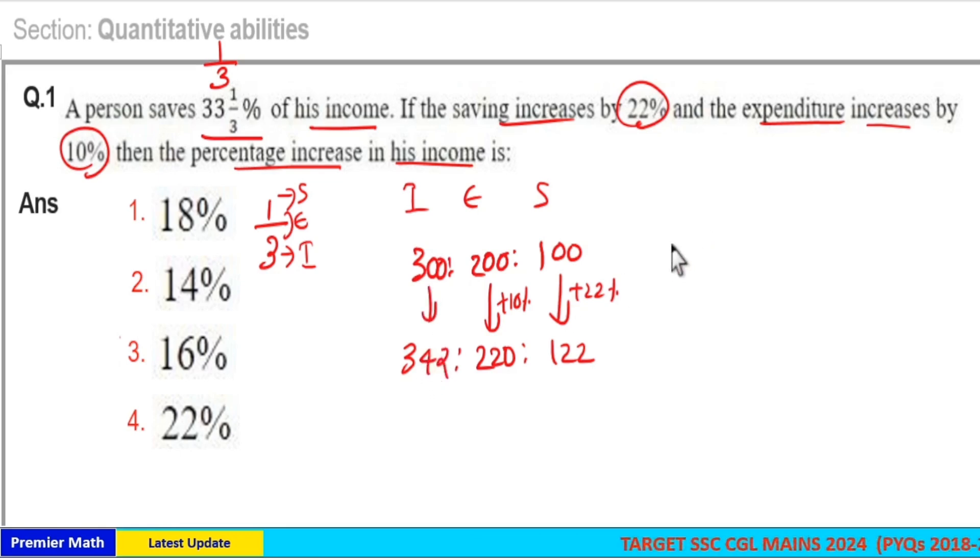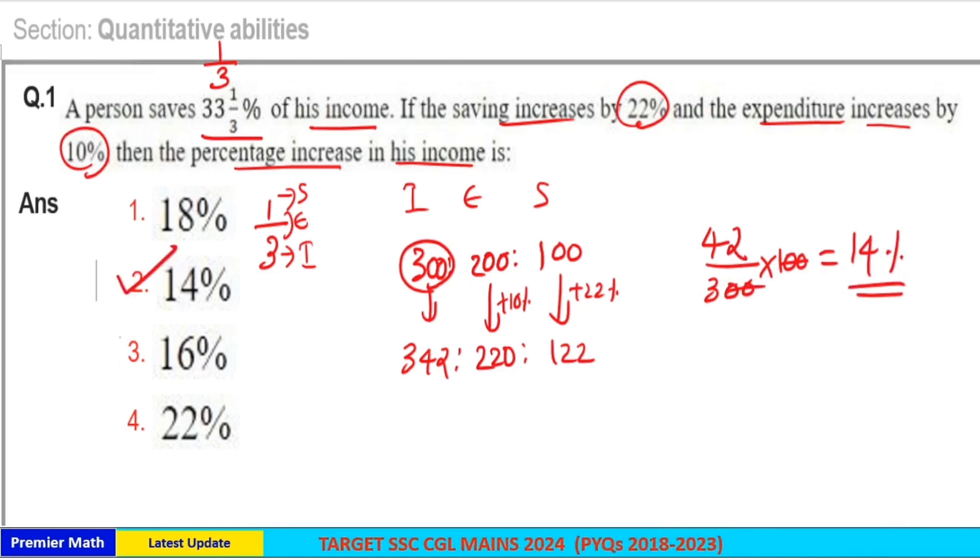The increment is 42 out of initial 300, times 100 for the percentage increment. 42 divided by 3 equals 14. So 14 percent is the increment in income. Option 2 is your answer.